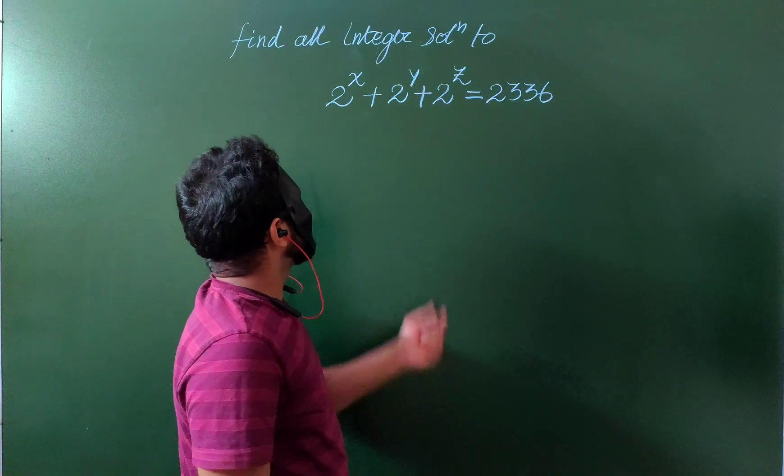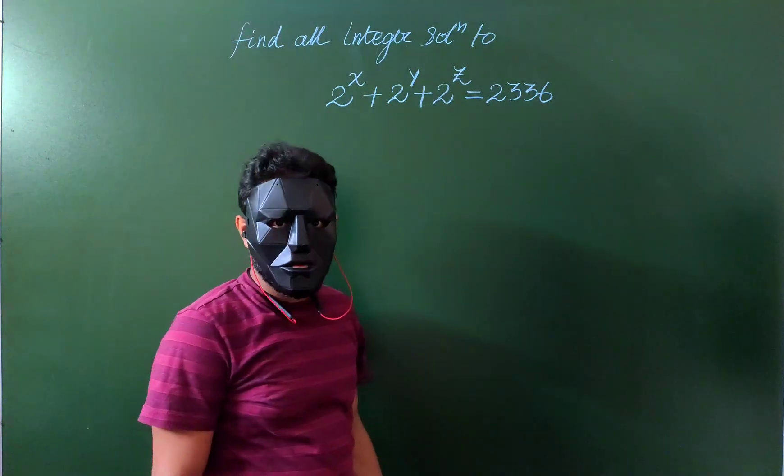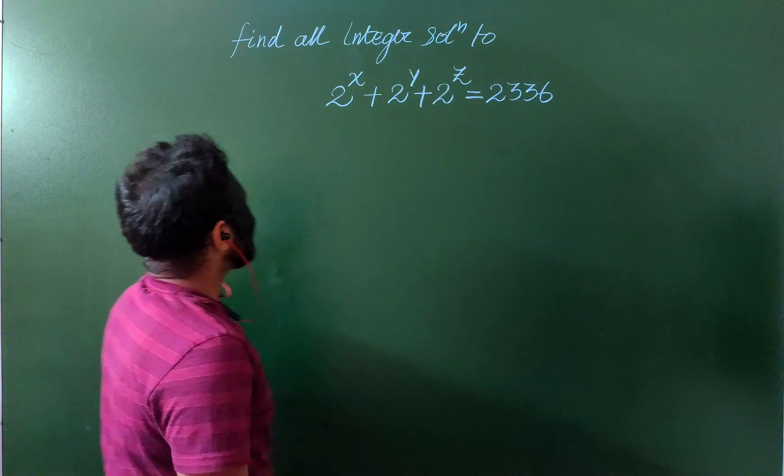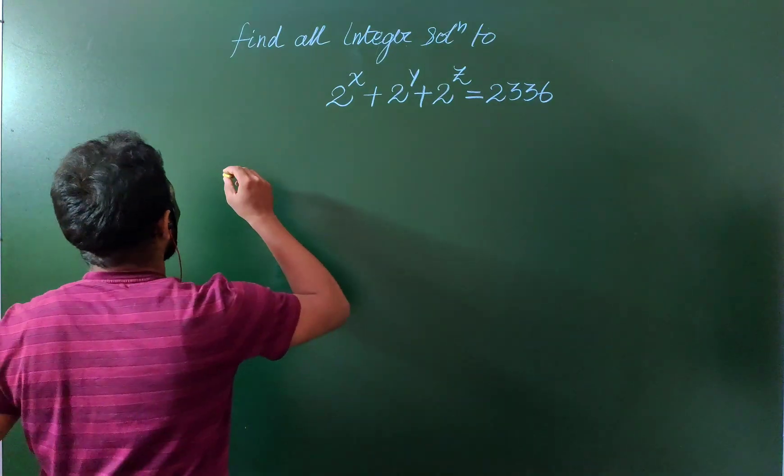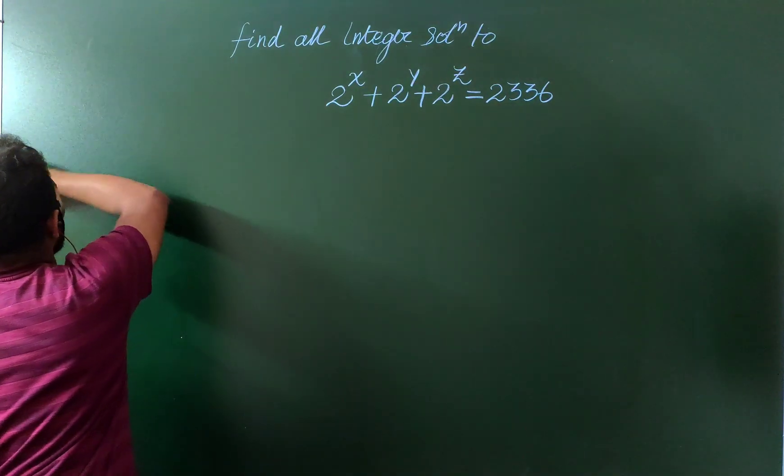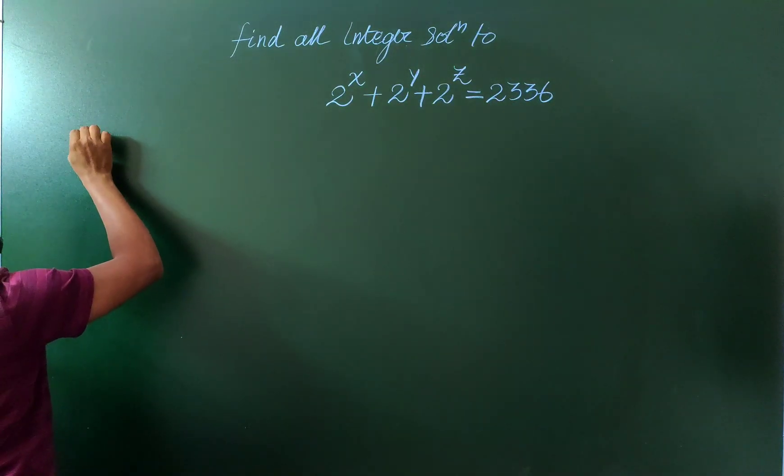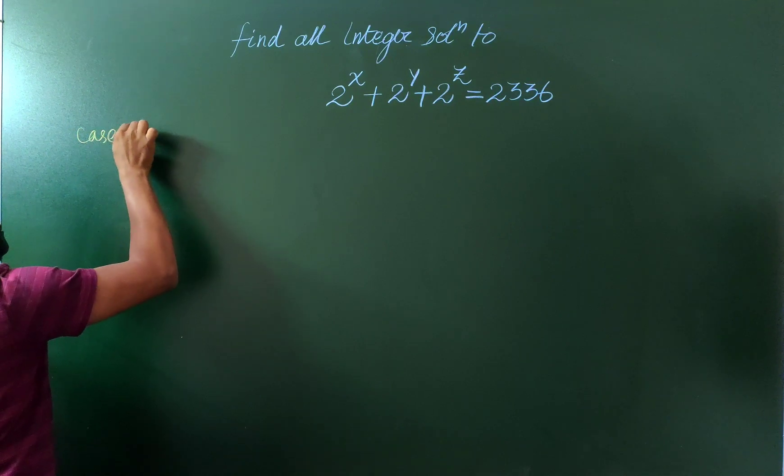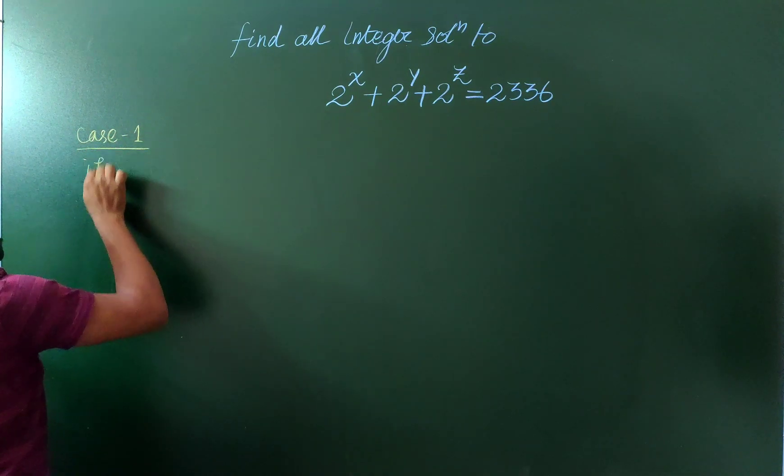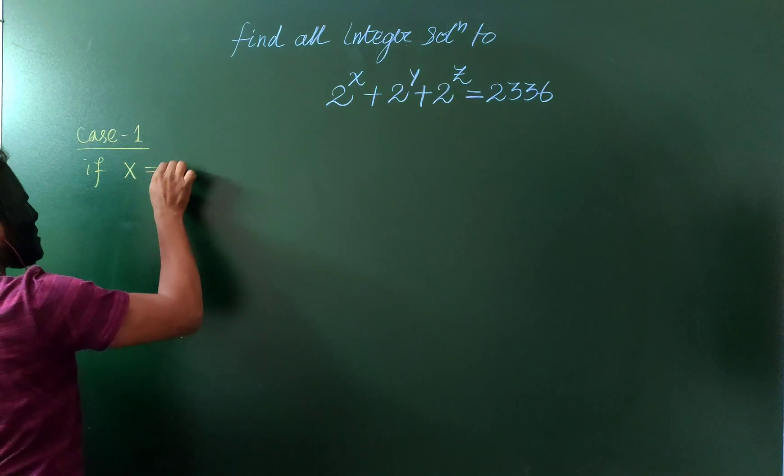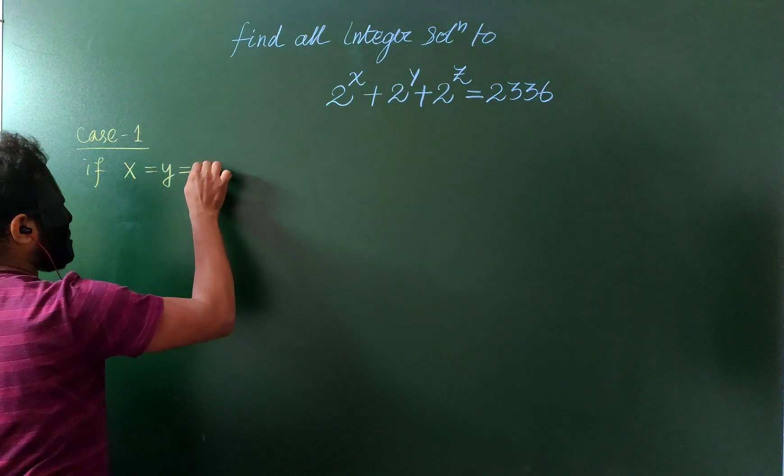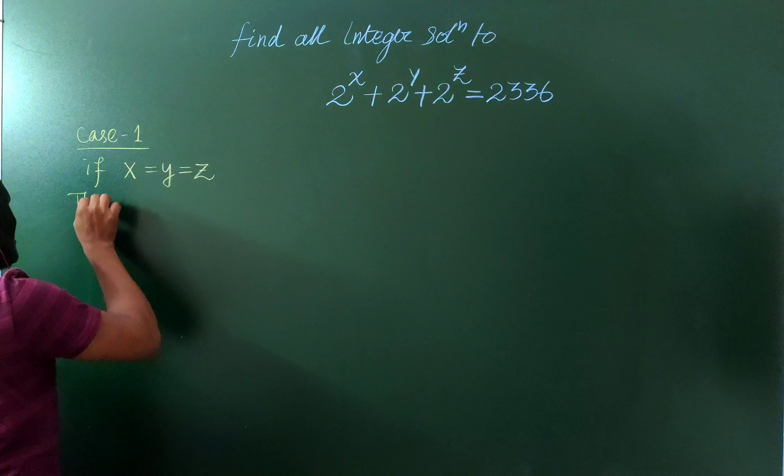If I take, for example, case 1: x equals y equals z, then no solution exists. It means they are not equal, so what can we do here?